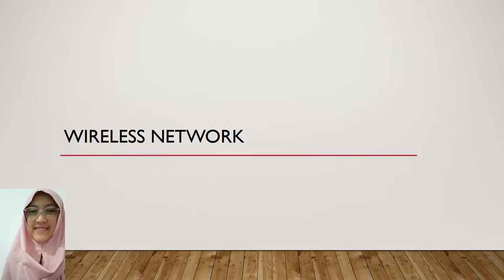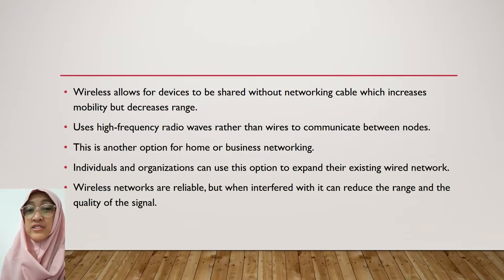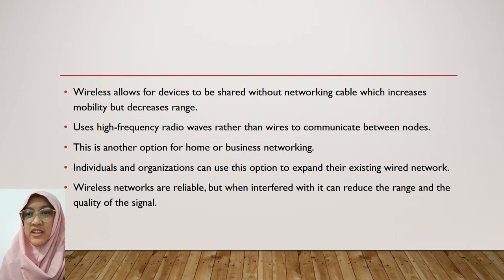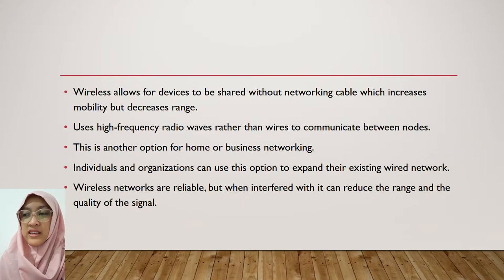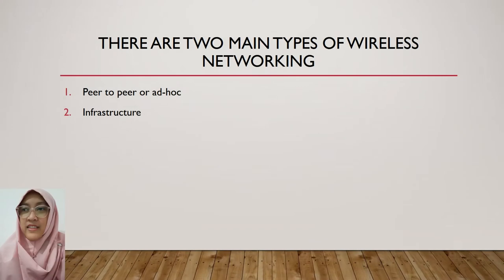That's it from me, Abdul Hafiz. My partner will now explain about the wireless network. Assalamualaikum warahmatullahi wabarakatuh. I would like to present about wireless network. Firstly, the definition of wireless: wireless allows devices to be shared without networking cable, which increases mobility but decreases range. It uses high frequency radio waves rather than wires to communicate between nodes. This is another option for home or business networking. Individuals and organizations can use this option to expand their existing wired network. There are two main types of wireless networking: first, peer-to-peer or ad-hoc, and second, infrastructure.